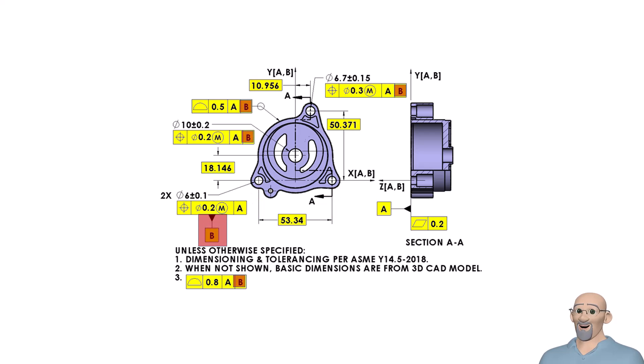Datum feature B is referenced at regardless of material boundary or RMB. Because datum feature B is at RMB, using the two holes as a pattern produces a much different effect than if we had used one hole as datum feature B and the other hole as datum feature C.